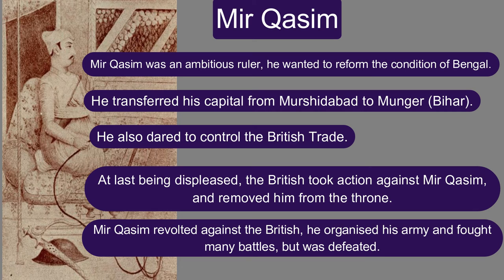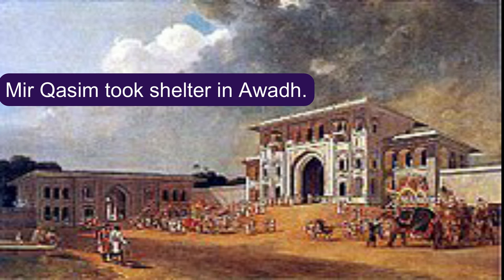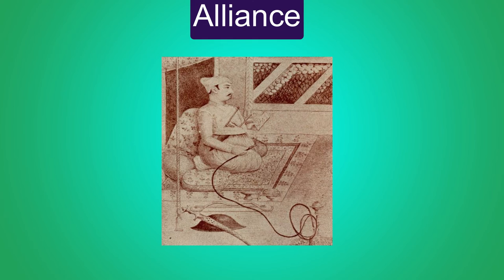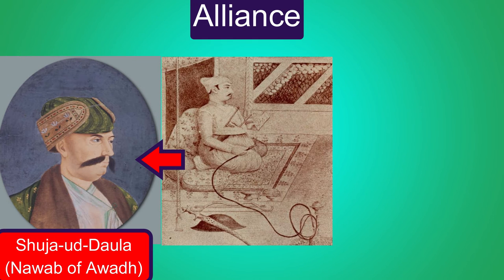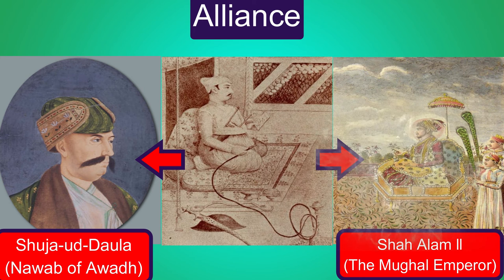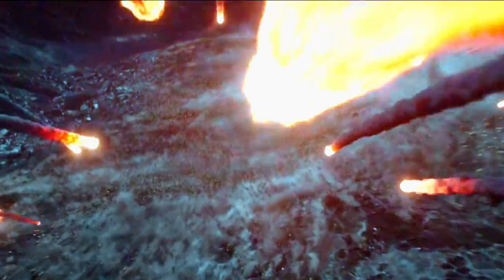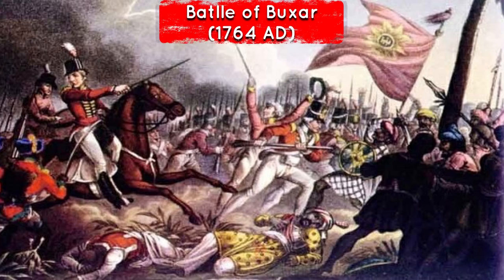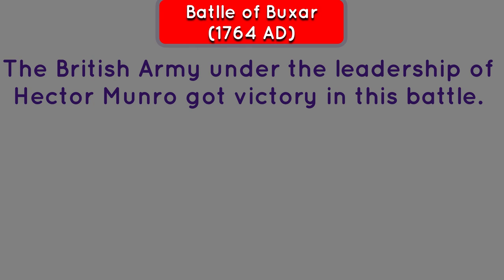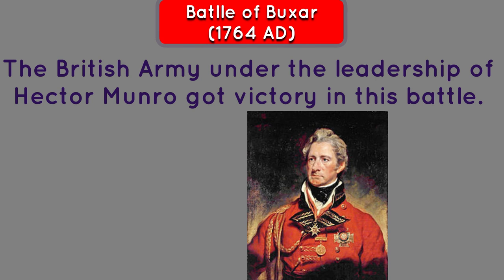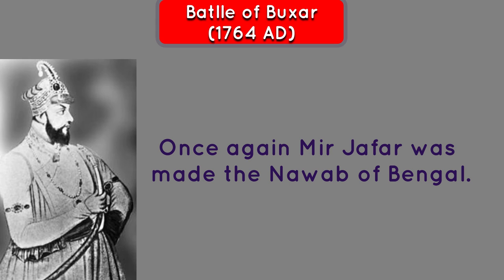Mir Qasim revolted against the British. He organized his army and fought many battles but was defeated. Mir Qasim took shelter in Awadh and made an alliance with Shuja-ud-Daula, the Nawab of Awadh, and Shah Alam II, the Mughal Emperor. In this way, in 1764, the joint forces fought a gruesome battle with the British army on the field of Buxar. This battle is known as the Battle of Buxar 1764 in Indian history. The British army under the leadership of Hector Munro got victory in this battle. Once again, Mir Jafar was made the Nawab of Bengal.